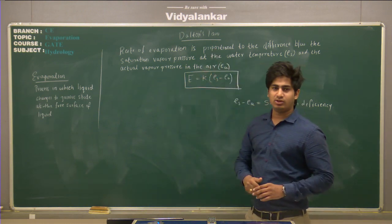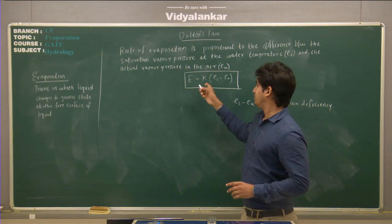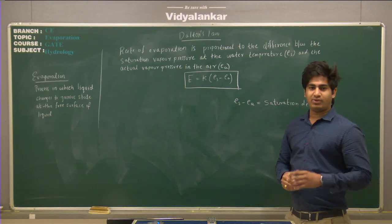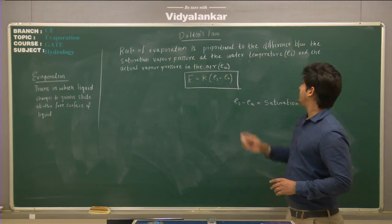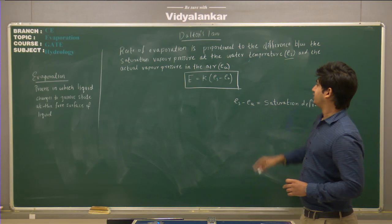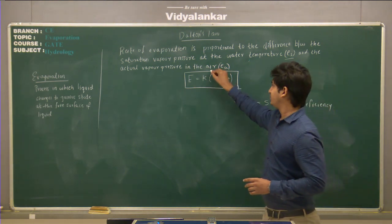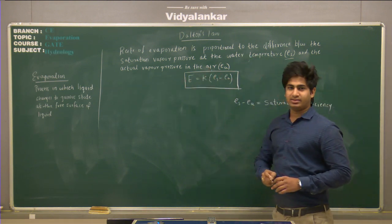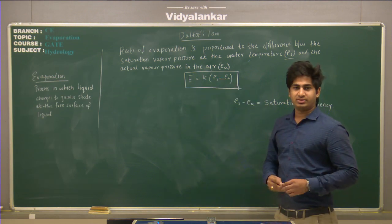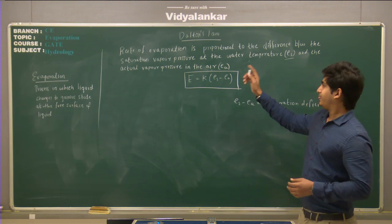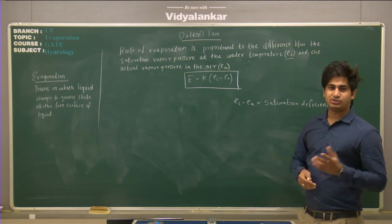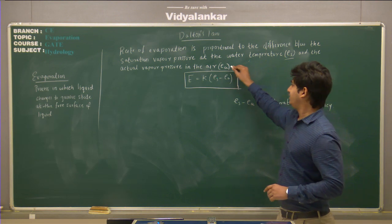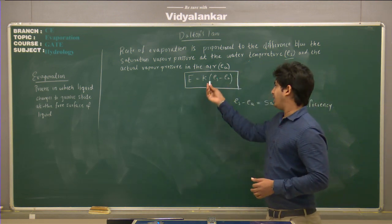Now, Dalton's law. Dalton gave the equation for evaporation. The rate of evaporation is proportional to the difference between the saturation vapor pressure at the water temperature — denoted as Es — and the actual vapor pressure in the air — denoted as Ea. So the difference between Es and Ea is directly proportional to the rate of evaporation. K is the constant of evaporation.